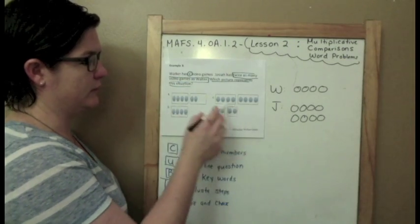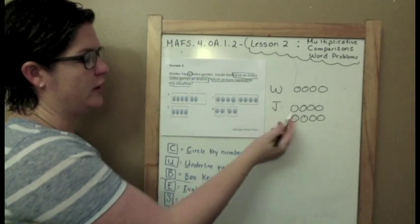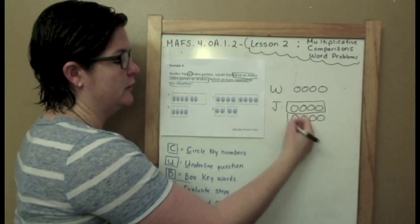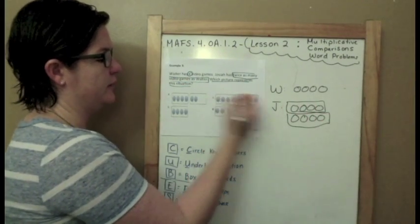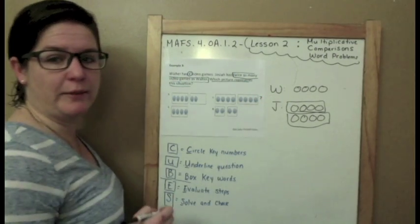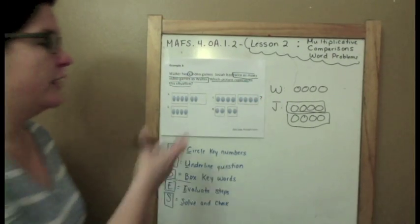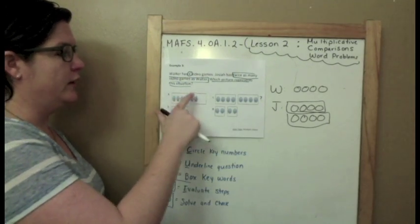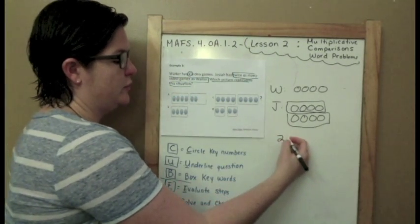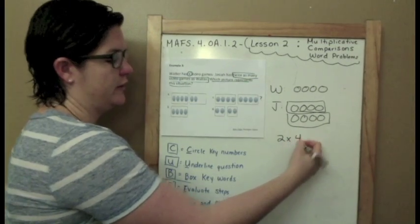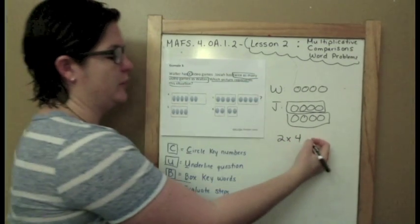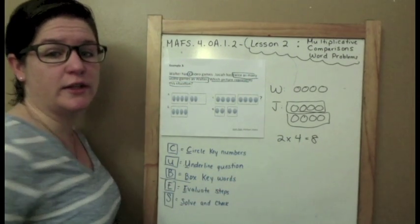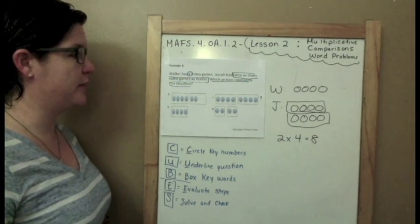Let's go with the correct answer first. The one that matches my picture of Josiah is C. I'm going to put a question mark there because that's the one that I think it is, but let me look at the other ones too. So this would have been 2 times the 4, which would equal 8, 2 times what Walter did, which is 8 video games for Josiah.